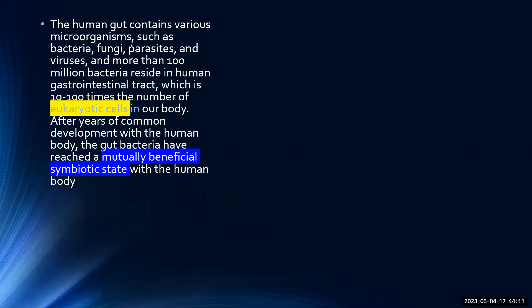The human gut contains various microorganisms. This article combines two theories — one is nervous system from unit 5, and microorganism from unit 4. So it's a combination of unit 4 and 5. The basic things: what are the microorganisms? Microorganisms are bacteria, fungi, parasites, and viruses.